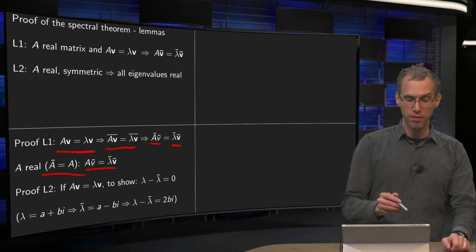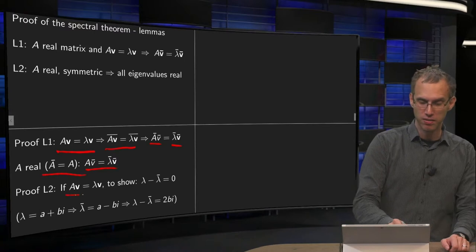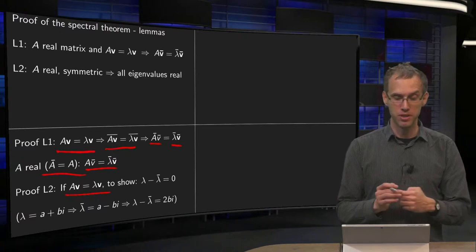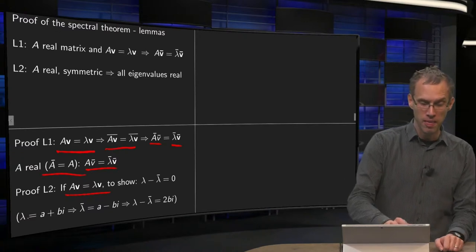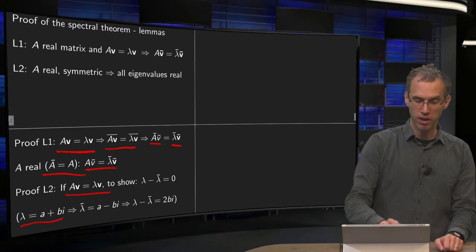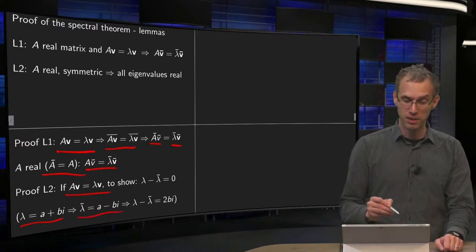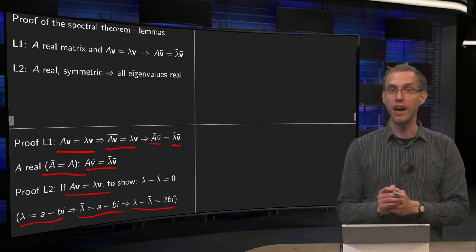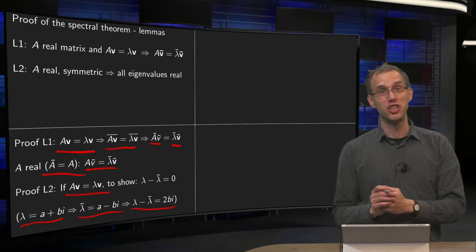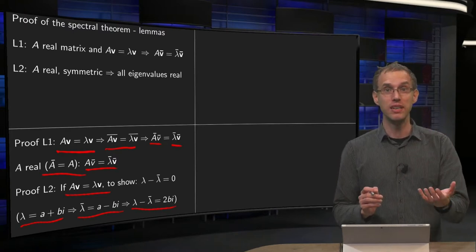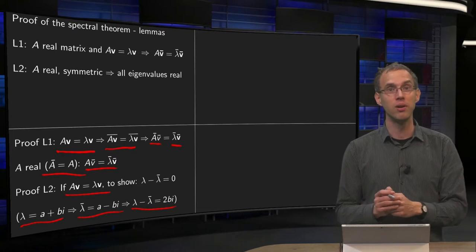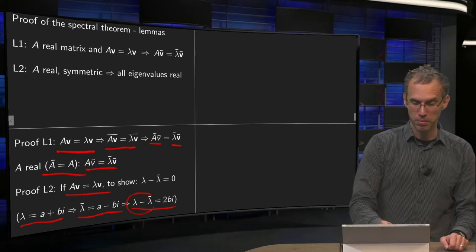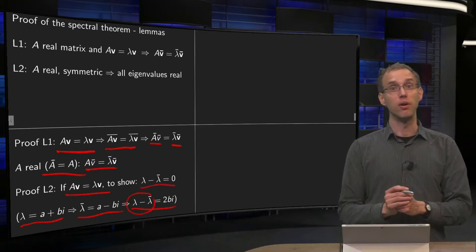Going to the second lemma, we want to show that if A is symmetric and A times V equals lambda times V, then the eigenvalues are real. If lambda equals A plus Bi, then lambda-bar equals A minus Bi. So if you take the difference, lambda minus lambda-bar equals 2Bi. In order to show that an eigenvalue is real, you have to show that B is zero — that is, the imaginary part is zero — so you have to show that lambda minus lambda-bar equals zero.